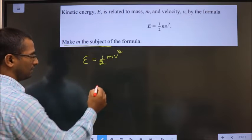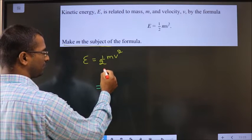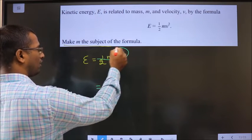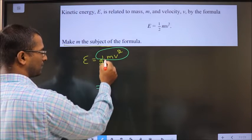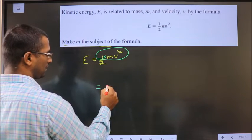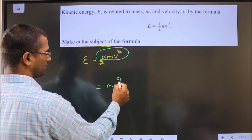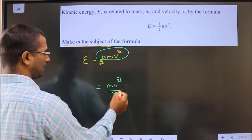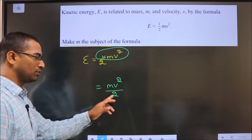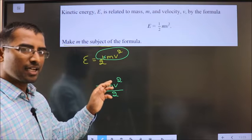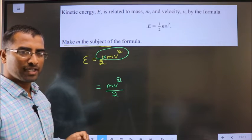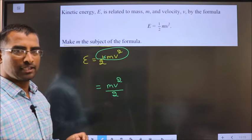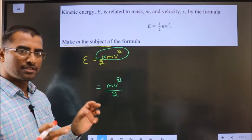Understand whether I write half Mv squared or Mv squared by 2, these are the same. In the numerator, 1 times Mv squared gives the same thing, and in the denominator, only 2. Whether I write half Mv squared or Mv square by 2, those two are the same.